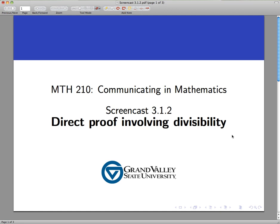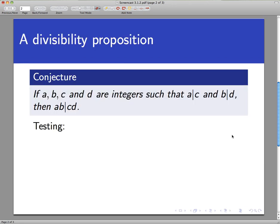Welcome back to another screencast where we're going to use what we learned about integer divisibility in the previous screencast and prove something with it. The main heart of this course is proof and communication, and now we're going to prove things involving divisibility, namely this conjecture here, which is really a fact, a theorem. It says that if a, b, c, and d are integers such that a divides c and b divides d, then ab divides cd.